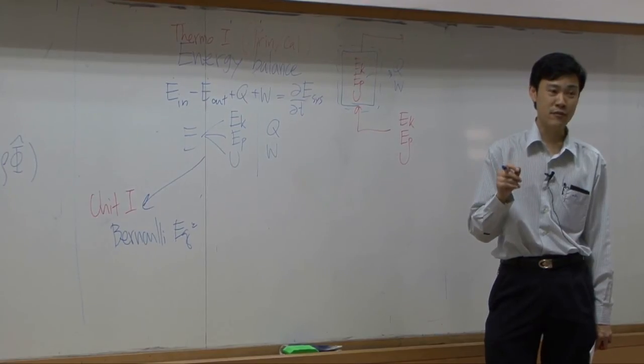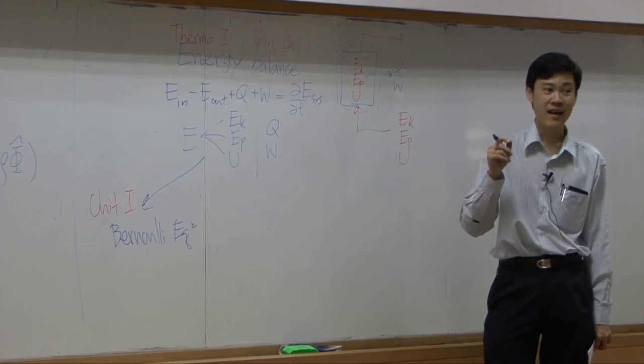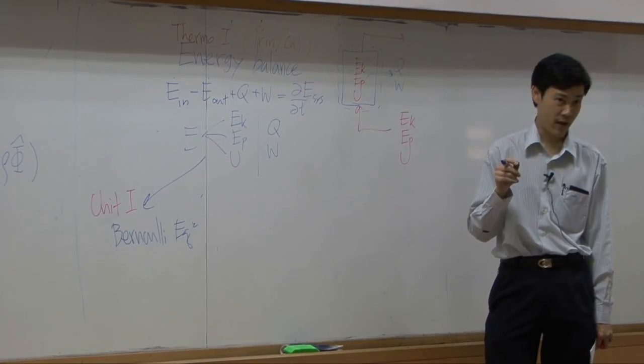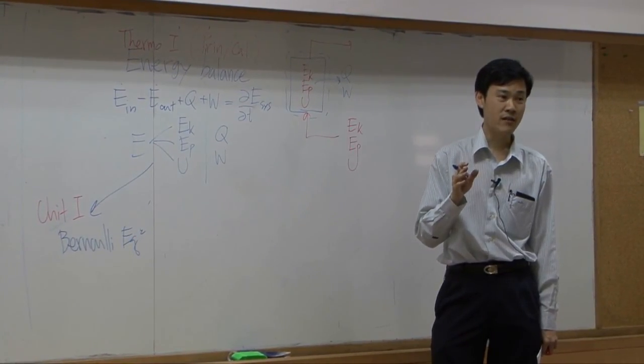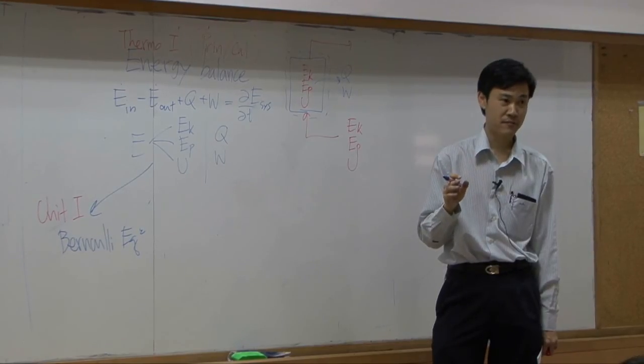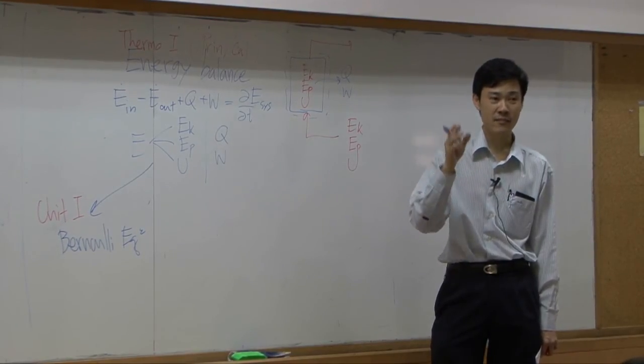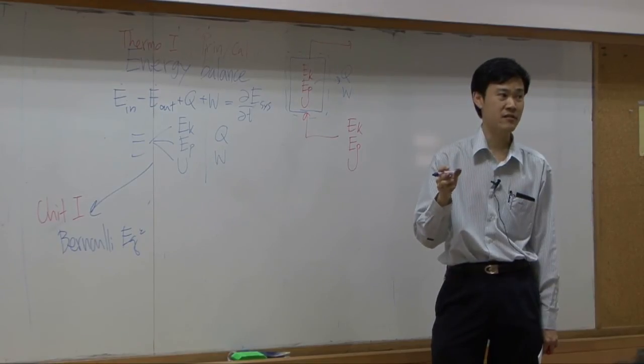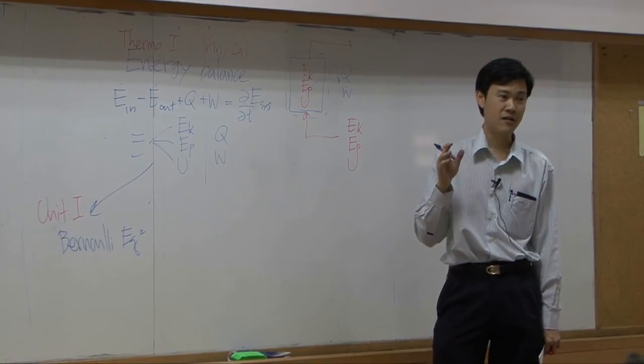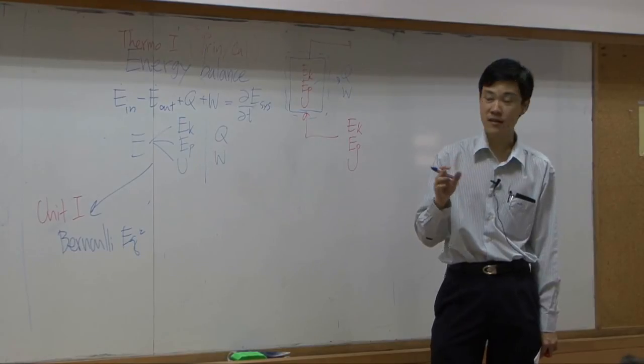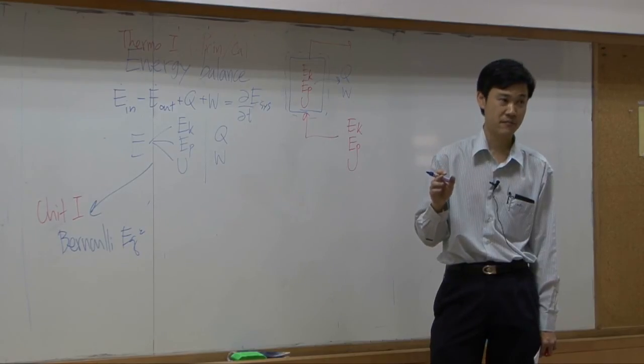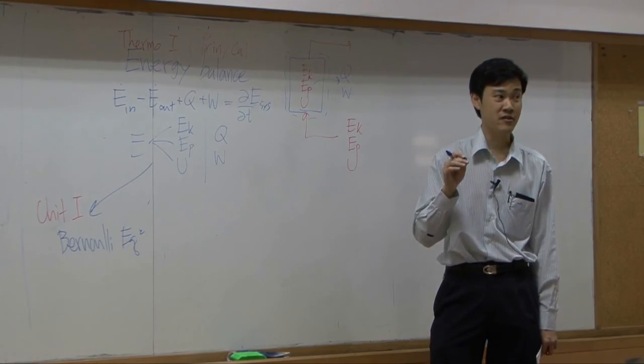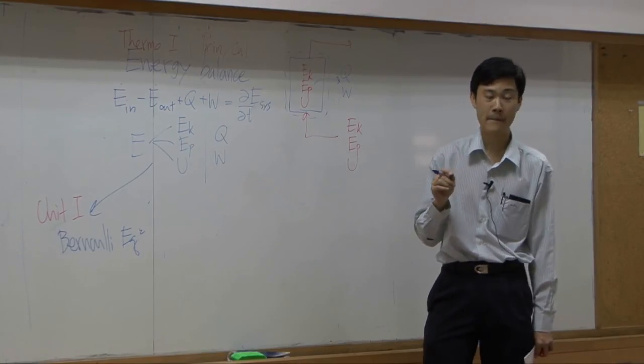The most important restriction of Bernoulli equation is we can use them only in isothermal system. In unit operation one, you never consider temperature change. In flow in pipe, in sedimentation, mixing, fluidization, everything out of the system are isothermal. Because Bernoulli equation does not consider temperature change. There is no temperature term in Bernoulli equation.